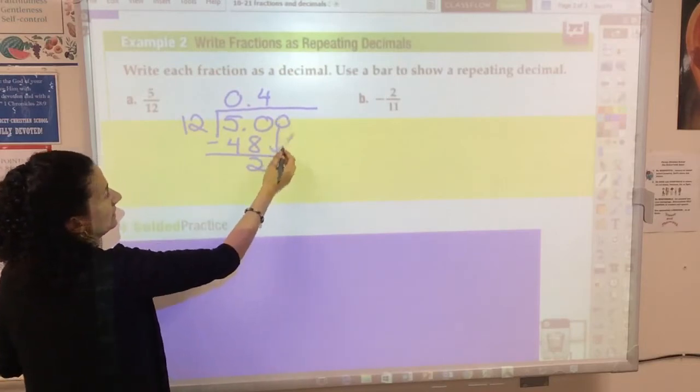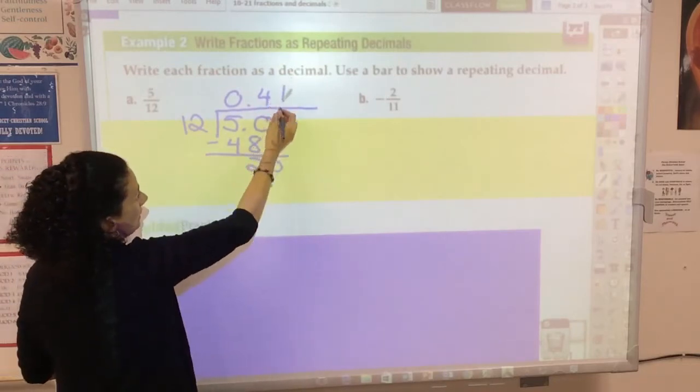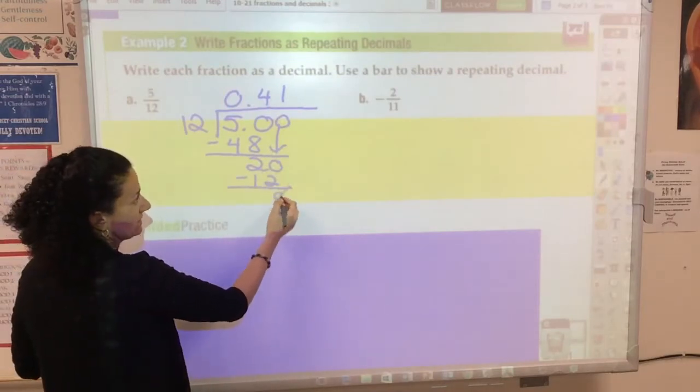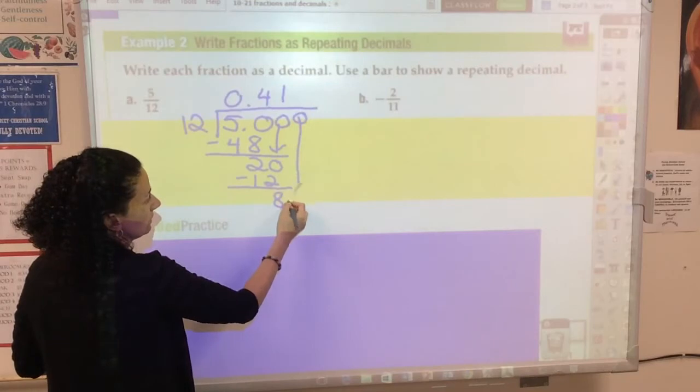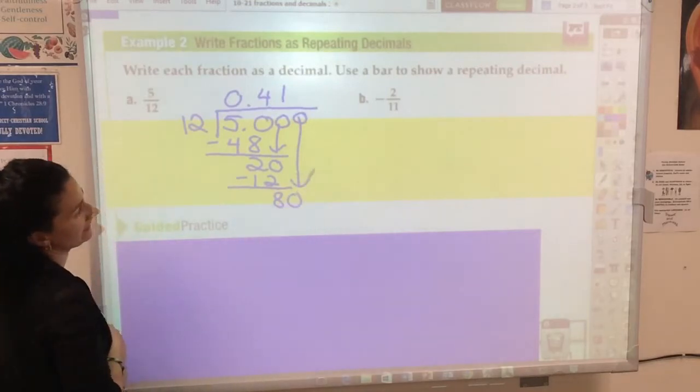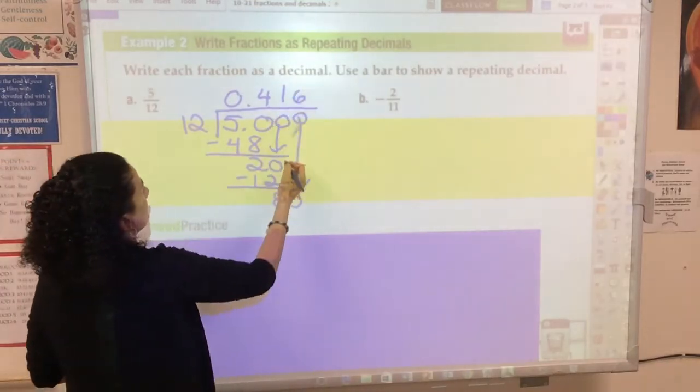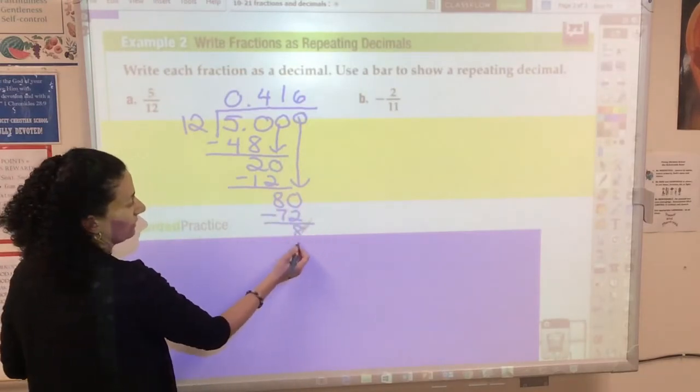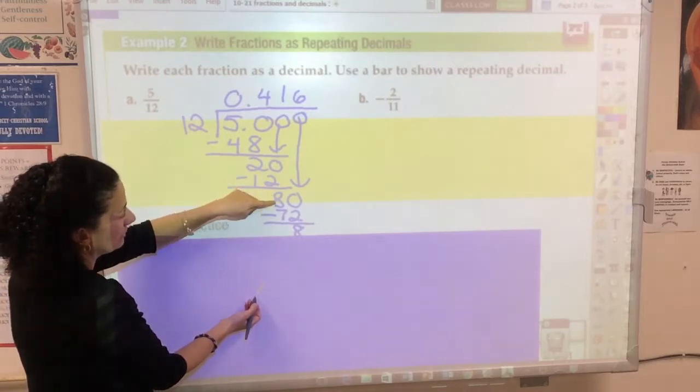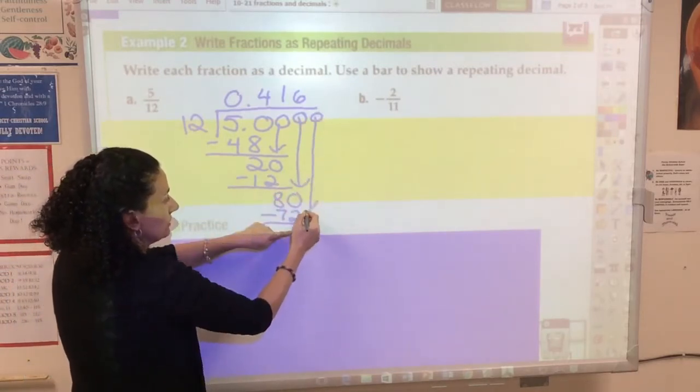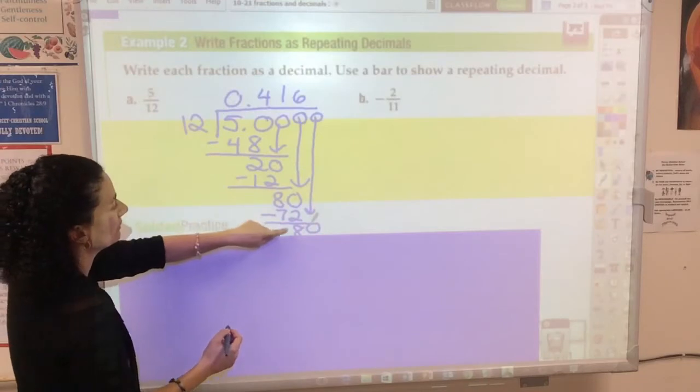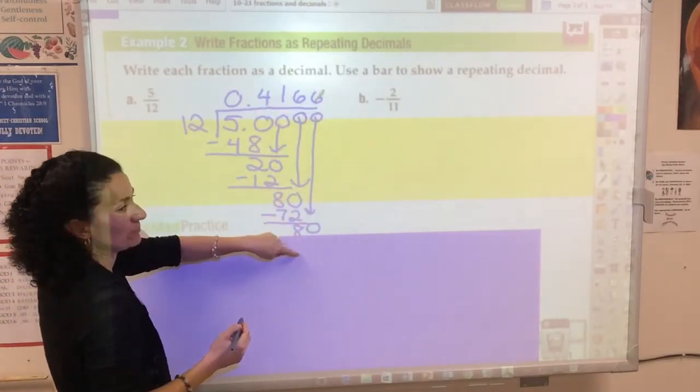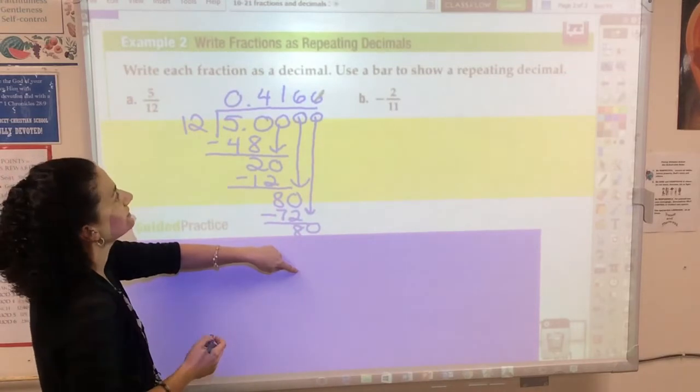Bring down a 0. 12 goes into 20 just one time. 1 times 12 is 12, remainder 8. Bring down another 0. 12 goes into 80 six times. 6 times 12 is 72. And aha, here I'm noticing a remainder of 8 again. If I bring down another 0, 12 is going to go into 80 six times again, and I'm going to have the same remainder over and over. So the 6 repeats.